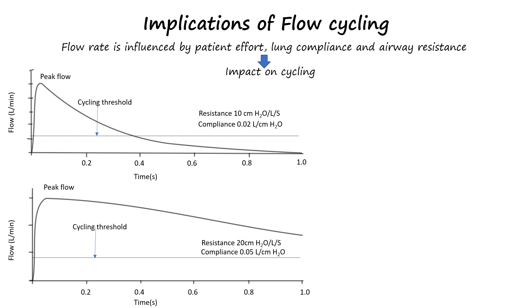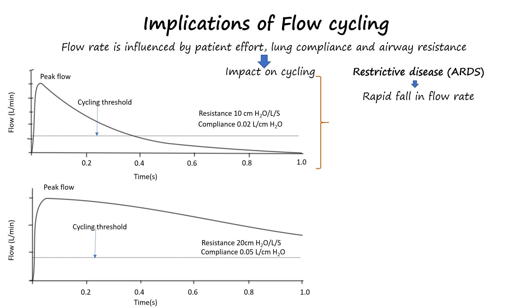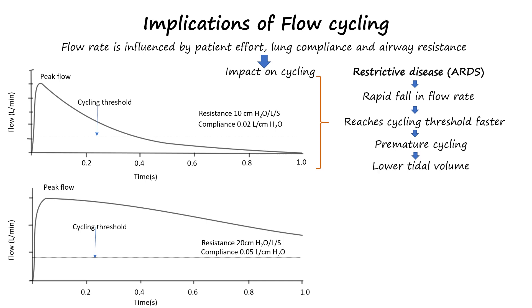For instance, patients with restrictive lung disease like ARDS will have poor respiratory compliance and their flow rate will drop rather quickly due to stiffness of the lung. This rapid drop will reach the cycling threshold faster, prematurely resulting in a shorter inspiratory phase. Therefore, the tidal volume in a patient with restrictive lung disease will be low.